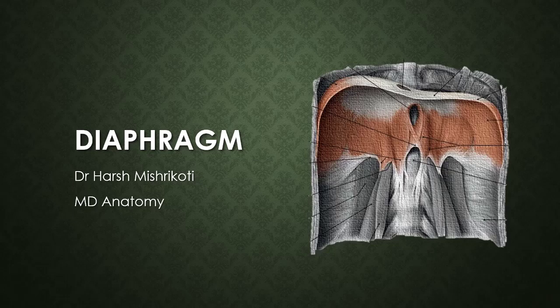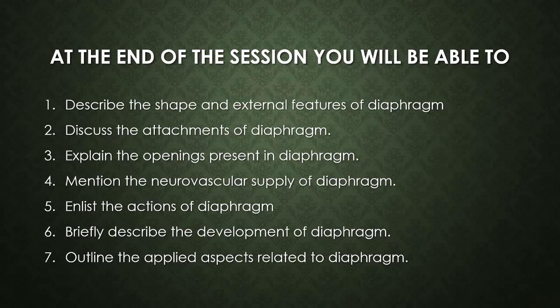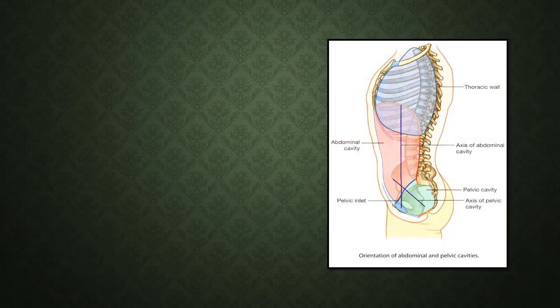Hello friends, welcome back. In this session we shall look at the diaphragm. These are the learning objectives: describing the shape and external features of the diaphragm, discussing its attachments, explaining the openings present in the diaphragm, mentioning the neurovascular supply, listing its actions, briefly touching its development, and outlining the related applied anatomical aspects.